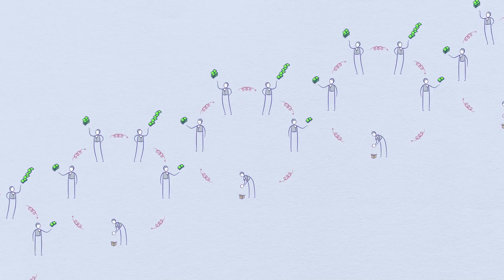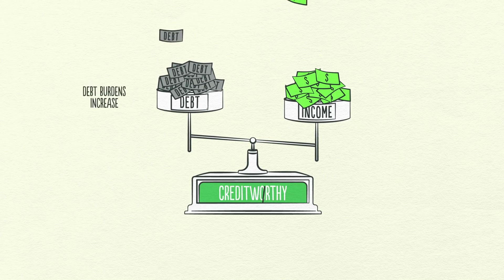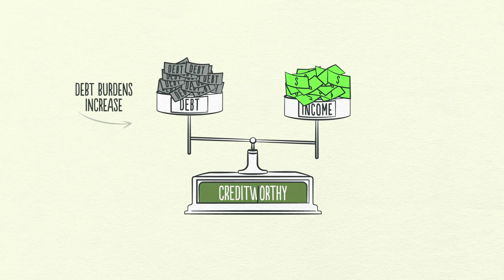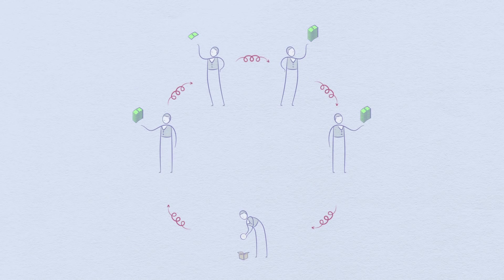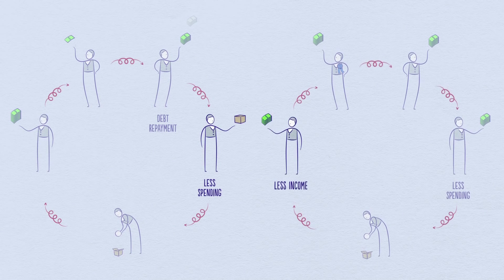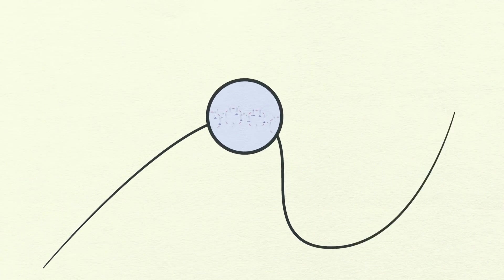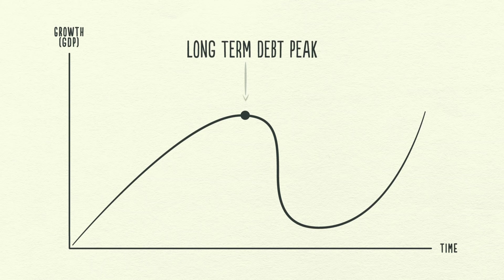But this obviously cannot continue forever, and it doesn't. Over decades, debt burdens slowly increase, creating larger and larger debt repayments. At some point, debt repayments start growing faster than incomes, forcing people to cut back on their spending. And since one person's spending is another person's income, incomes begin to go down, which makes people less creditworthy, causing borrowing to go down. Debt repayments continue to rise, which makes spending drop even further. And the cycle reverses itself.